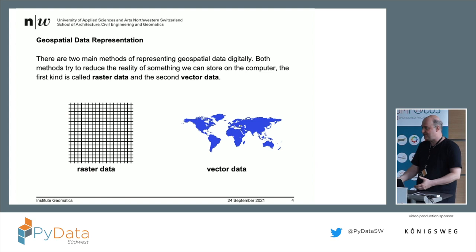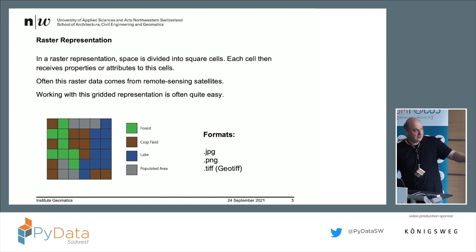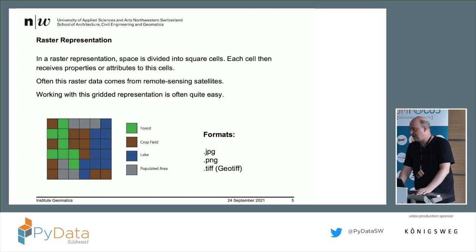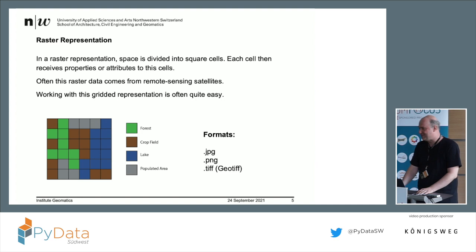Basically, we have two kinds of data. The first is the easy one — raster data. And the second one is vector data. If you process raster data, it's really easy. You can just, for example, count the pixels. Usually you have many million by many million. So you can count certain colors — for example, you see 30% is a lake. That's really easy with raster data.